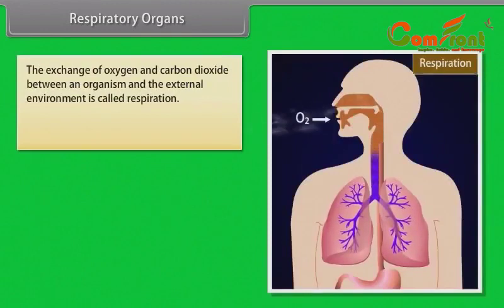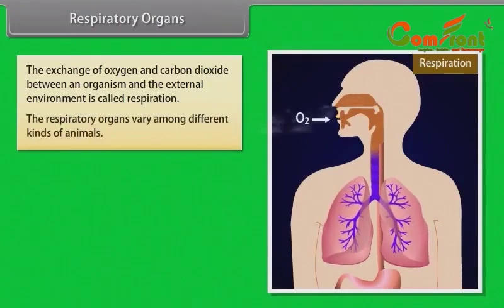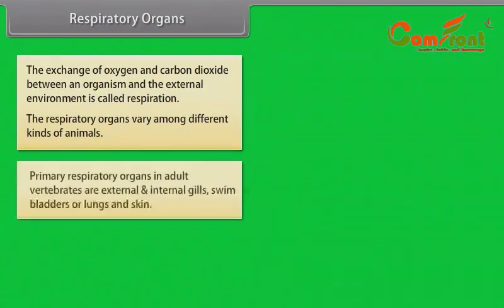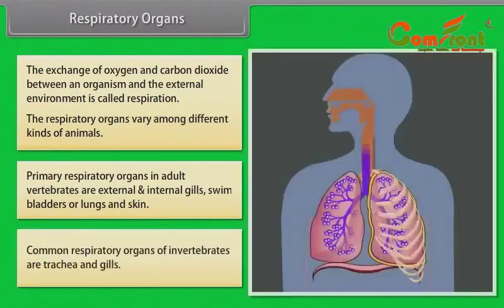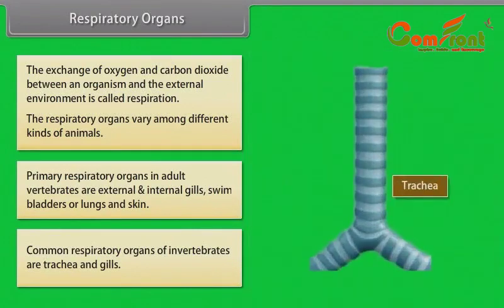Respiratory organs: The exchange of oxygen and carbon dioxide between an organism and the external environment is called respiration. The respiratory organs vary among different kinds of animals. Primary respiratory organs in adult vertebrates are external and internal gills, swim bladders or lungs, and skin. Common respiratory organs of invertebrates are trachea and gills.